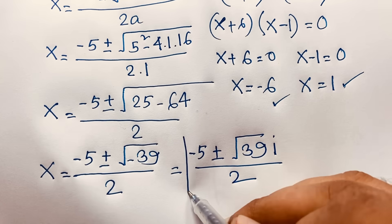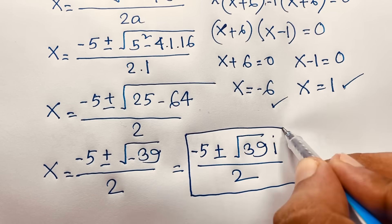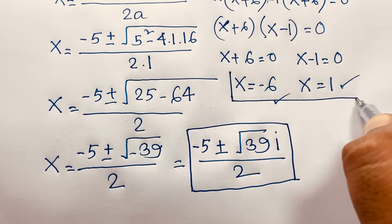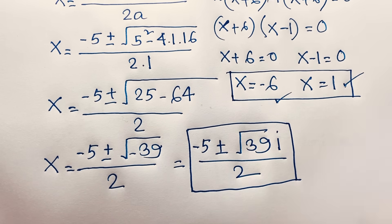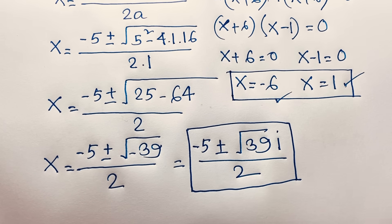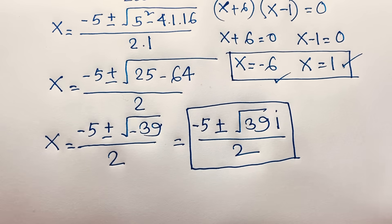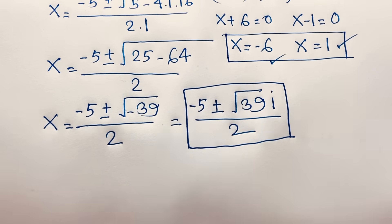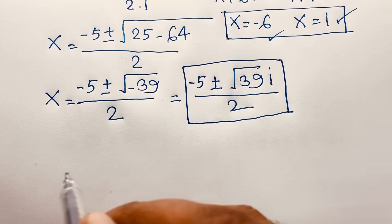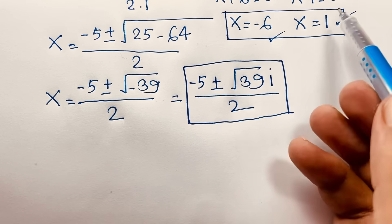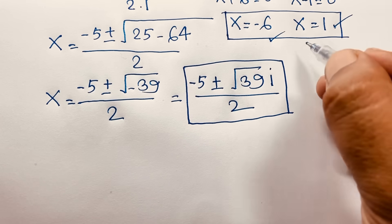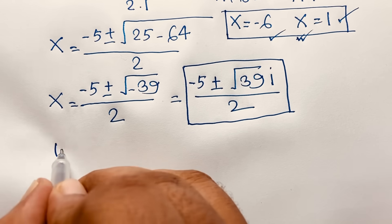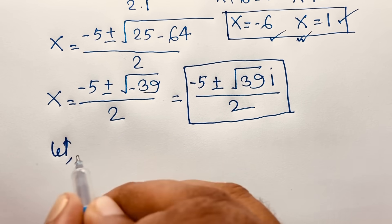In total we find four solutions: x = −6 and x = 1 are the real solutions, and x = (−5 ± i√39)/2 are the complex solutions. Let's verify the real solutions by substituting back into the original equation.